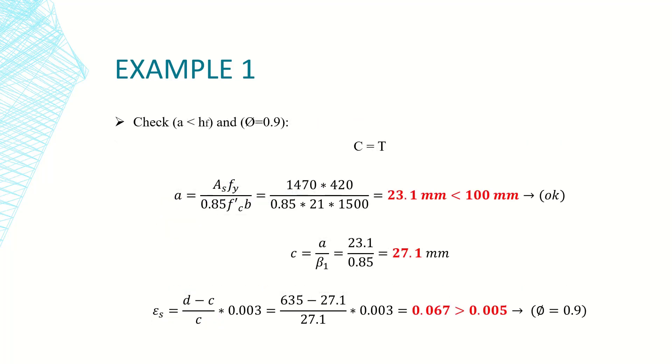Now we have to check our assumptions. So the first assumption is that a is less than h flange, or in other words, the neutral axis passes through the flange.